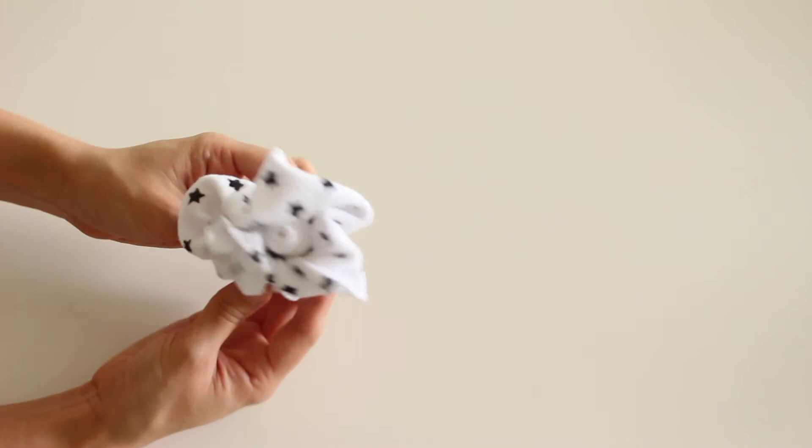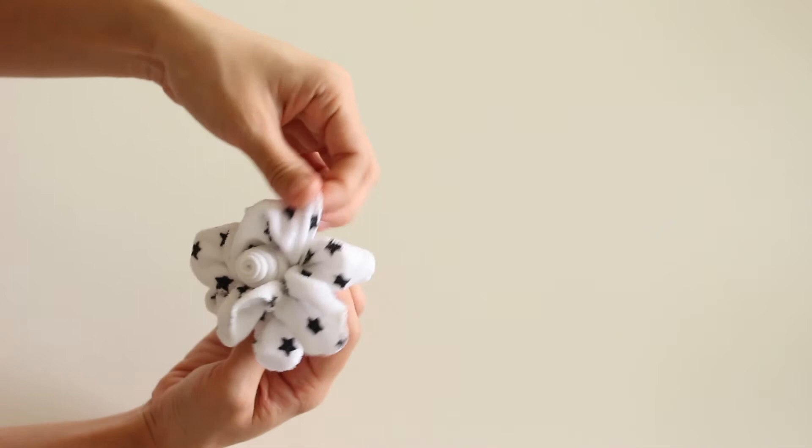If you see puffs between the flower petals, tuck them under the hair tie. Continue tugging until the petals look like a flower.